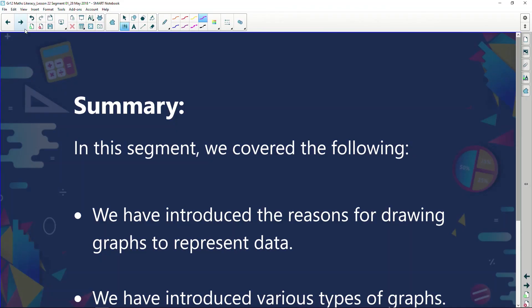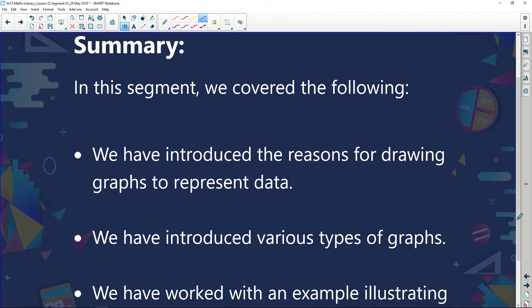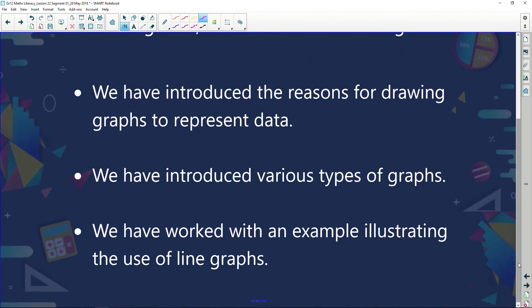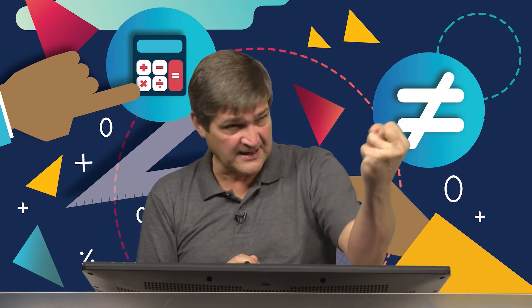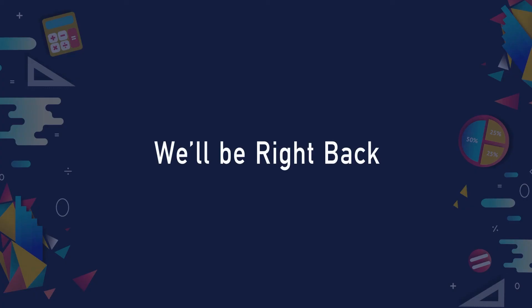That's how we read off our line graphs. In summary, in this segment we've covered the following: we've introduced the reasons for drawing graphs to represent data; we've introduced various types of graphs; and we've worked with an example illustrating the use of line graphs — first by drawing a graph, and then by looking at a graph that's already drawn and extracting information from it. Those are the two ways your examiner can ask you questions at the end of the year: draw this graph, or here's a graph and I'm going to ask you questions about it.